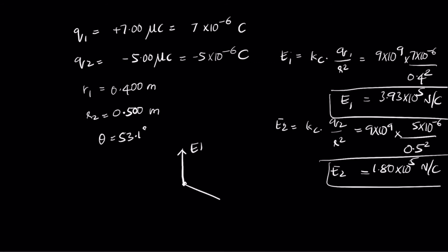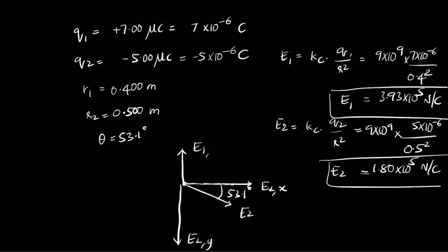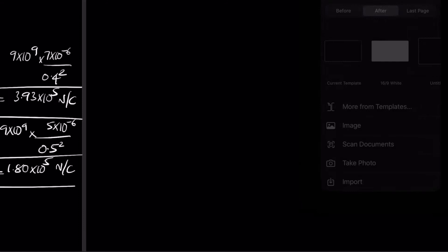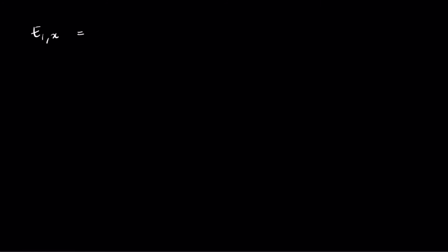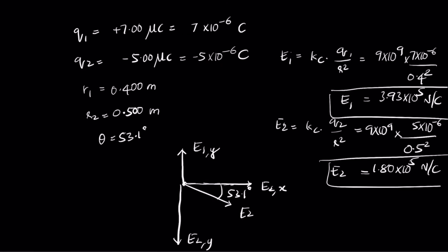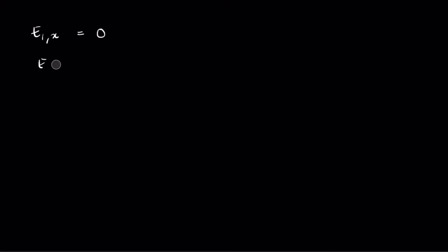E1 points upward along the y-axis, and E2 is at 53.1 degrees from the x-axis. We need to split them into components. E1 has no horizontal component, so E1x = 0 and E1y = E1 = 3.93×10⁵ N/C.